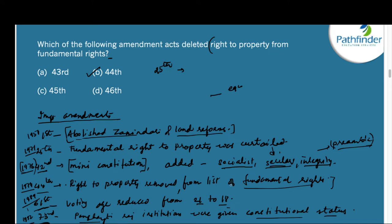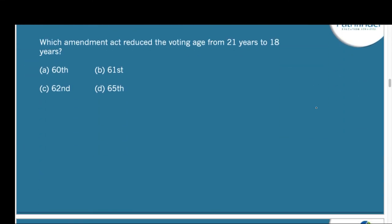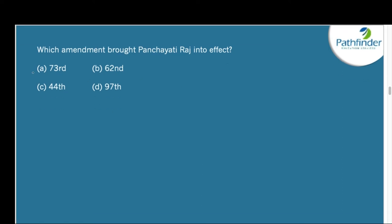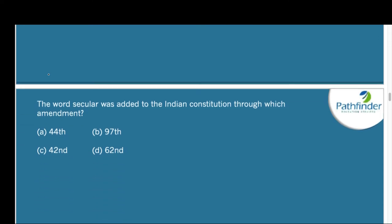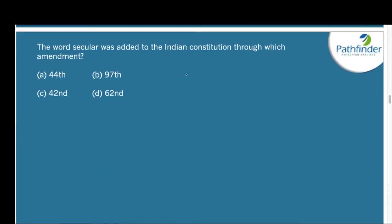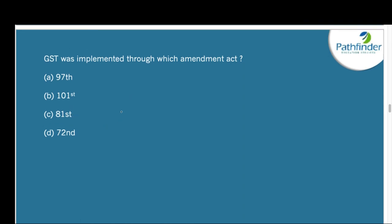The 86th Amendment introduced elementary education as a fundamental right. To summarize key amendments: the 61st Amendment reduced the voting age from 21 to 18 years; the 73rd Amendment brought Panchayati Raj into effect; the 42nd Amendment added the word secular to the Indian Constitution and is called the mini constitution; and GST was implemented through the 101st Amendment.